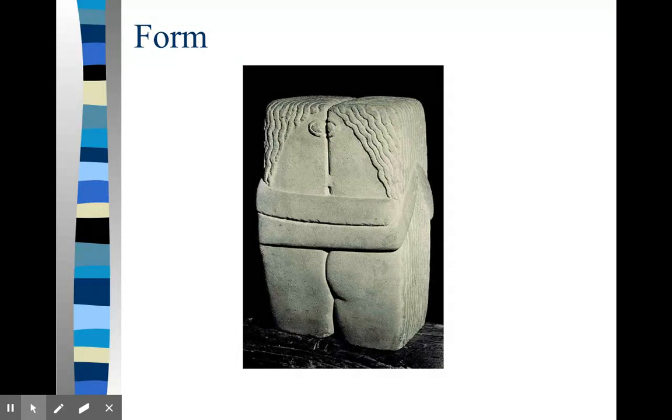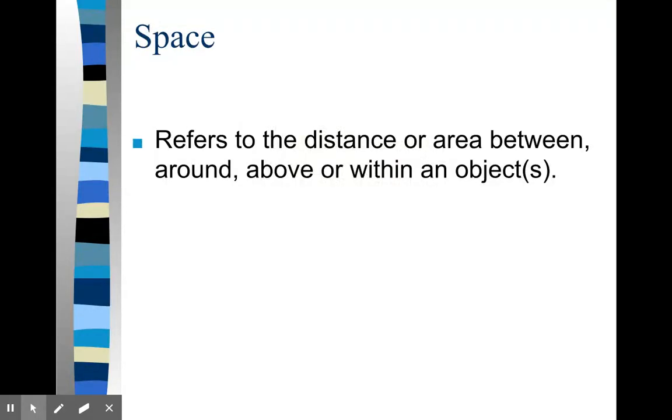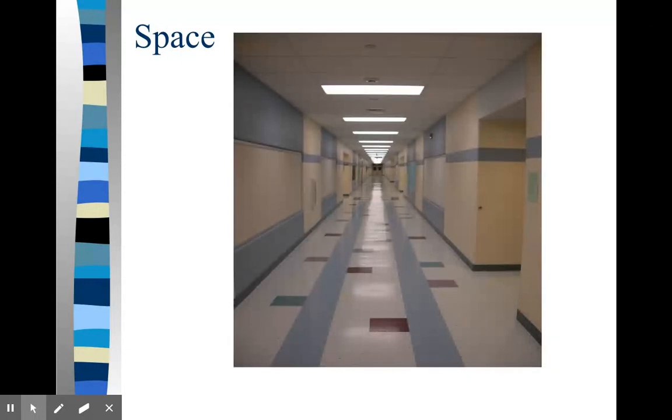You will notice that there is an implied line because the sculpture is light and the background is dark. That is not an actual line, it is an implied line. Space as we've been talking about refers to the distance between, around, and within objects. You can't have a sculpture without the use of space. If you take a look at this picture you will see that we have a real sense of space.